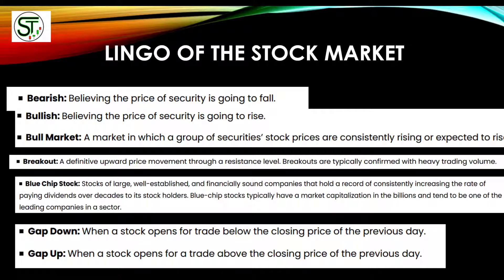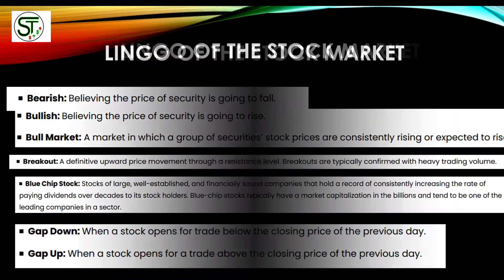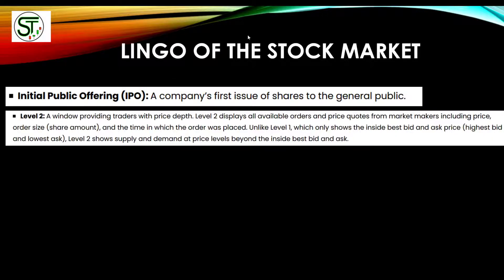A gap down is when a stock opens for trading below the closing price of the previous day. For example, you own a stock worth $10, you wake up the next morning and it's at $7 due to bad news — the stock gapped down before the market even opened. The opposite is a gap up — you own a stock at $10, you wake up and it's at $15, you're up without even doing anything. An IPO, or Initial Public Offering, is the first day a company's shares come to market for trading.